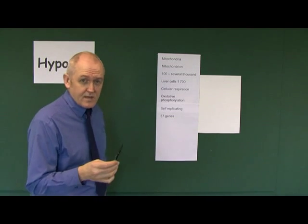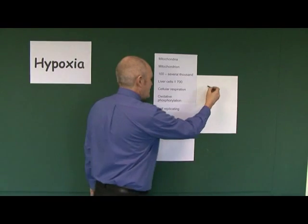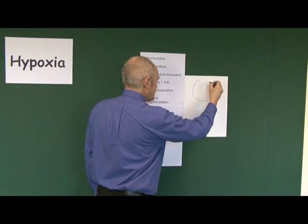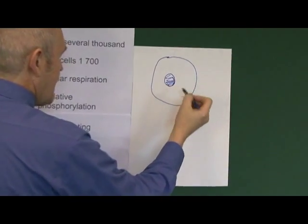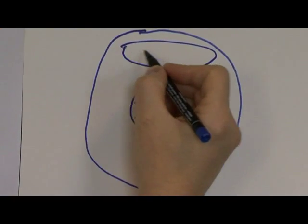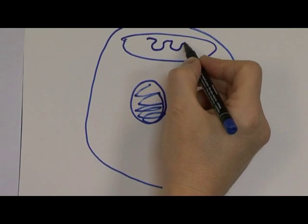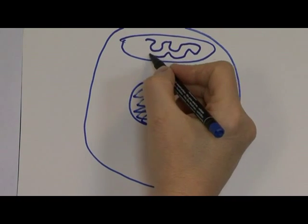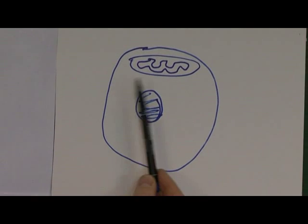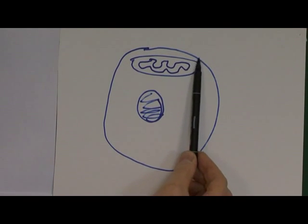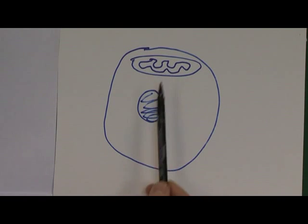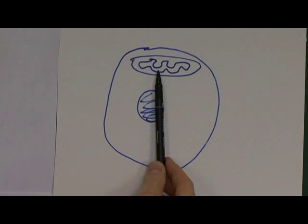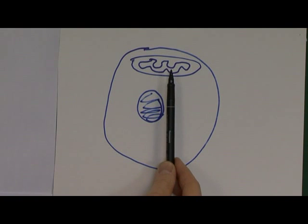Let's think about the mitochondria a little bit. So here we have a normal cell. As we know, we have the nucleus, and the mitochondria are the sausage-shaped organelles — they're not this big relatively. And they have a very highly enfolded inner membrane — sausage-shaped organelles with an outer membrane and a highly enfolded inner membrane. The inner membrane contains the enzymes that are needed for the production of energy.